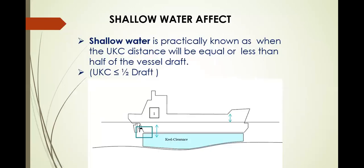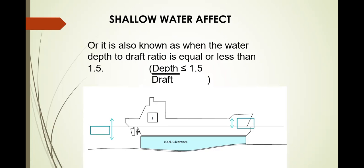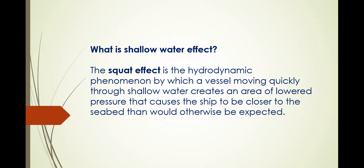Shallow water is practically defined as when the UKC distance is equal to or less than half of the vessel's draft. For example, if your draft is 10 meters and your UKC is 5 meters or less, you are already in shallow water. It is also defined as when the water depth to draft ratio is equal to or less than 1.5. The squat effect is the hydrodynamic phenomenon by which a vessel moving quickly through shallow water creates an area of lowered pressure that causes the ship to be closer to the seabed than would otherwise be expected.